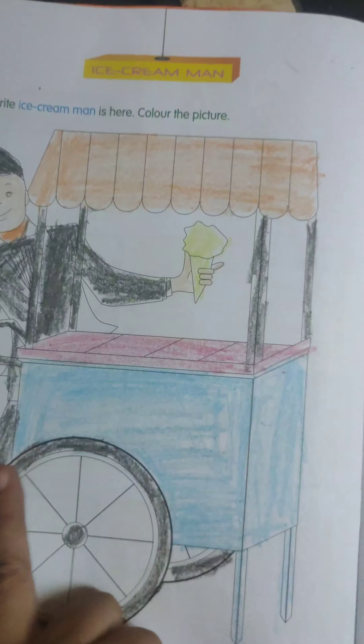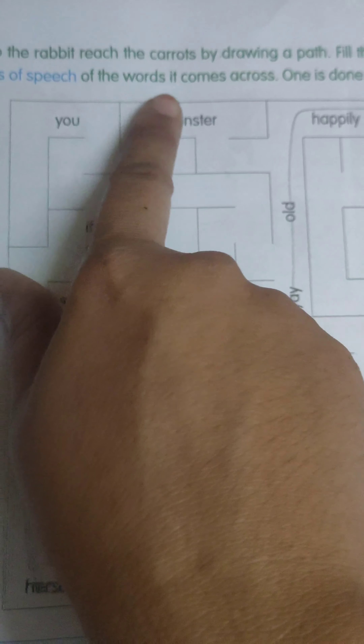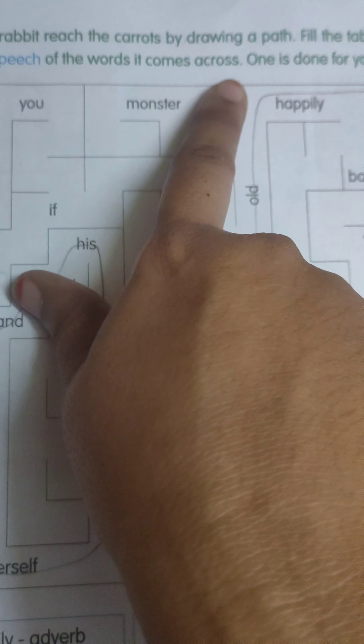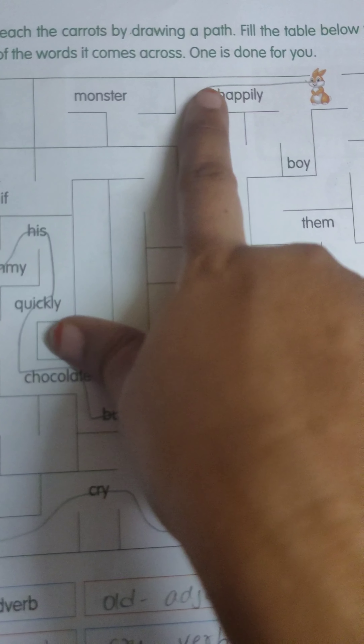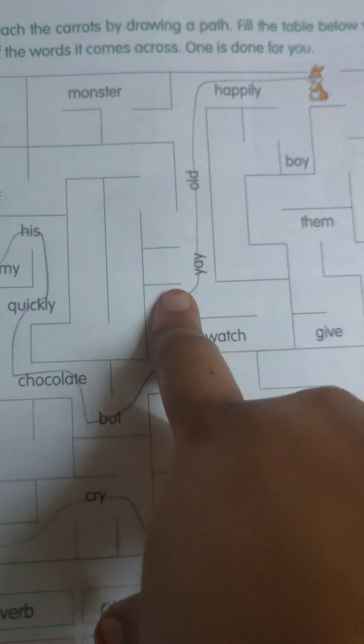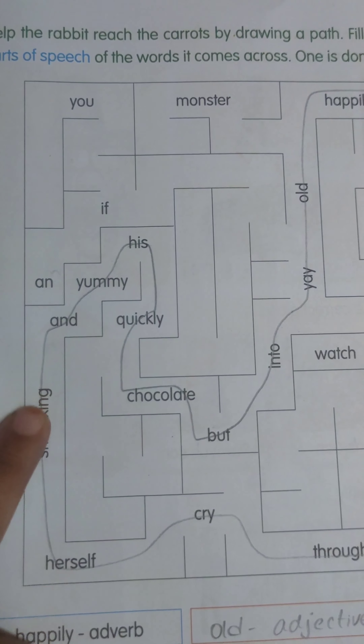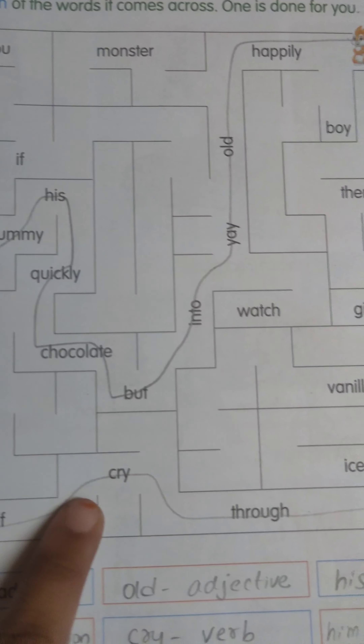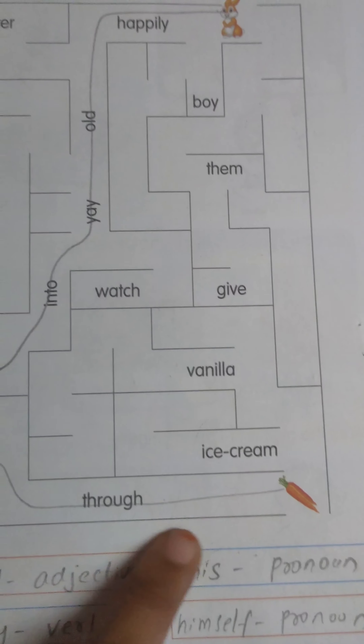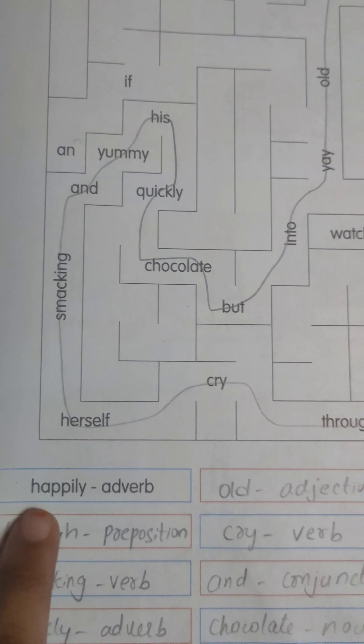Next, help the rabbit reach the carrots by drawing a path. Fill the table below with the parts of speech of the words you come across: happily, old, a, into, but, chocolate, quickly, his, yummy, and, smacking, herself, cry, through.